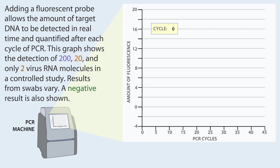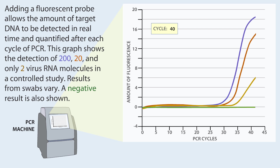Adding a fluorescent probe allows the amount of target DNA to be detected in real time and quantified after each cycle of PCR. This graph shows the detection of 200, 20, and only two virus RNA molecules in a controlled study. Results from swabs vary. A negative result is also shown.